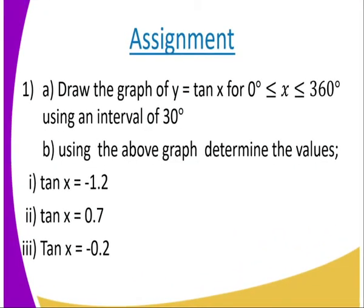The assignment for today: Draw the graph of y = tan x for zero degrees all the way to 360 using the intervals of 30 degrees. Then use that graph to get tan x = -1.2, tan x = 0.7, and tan x = -0.2.